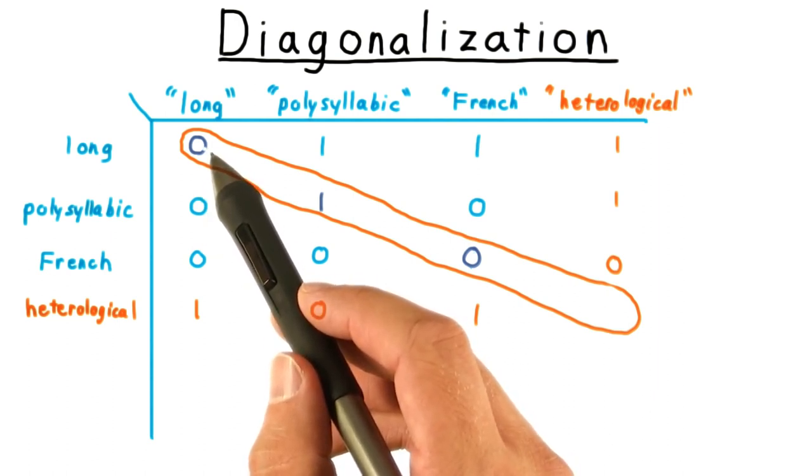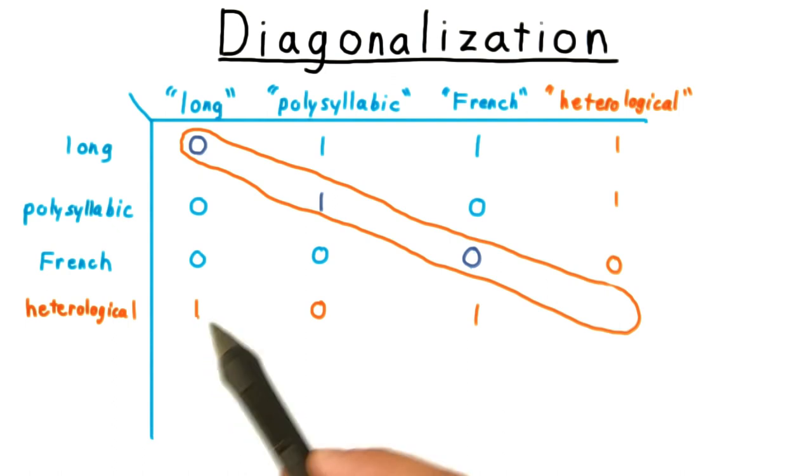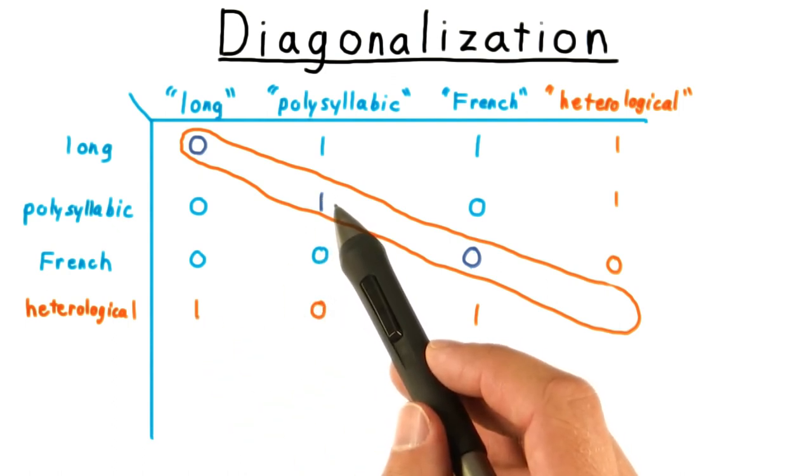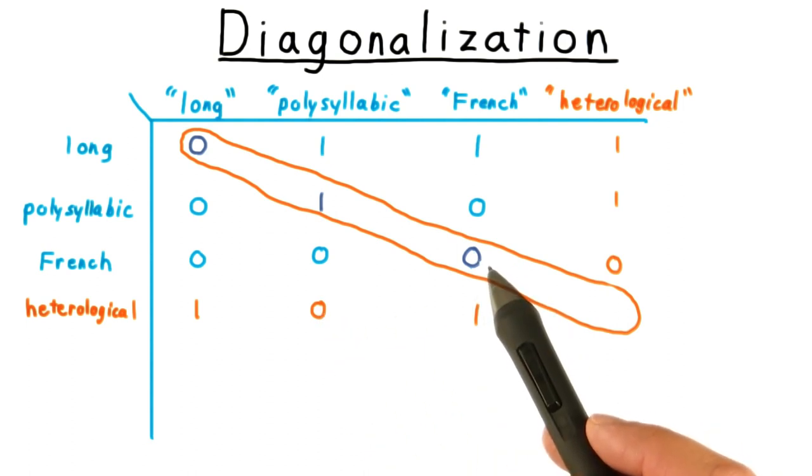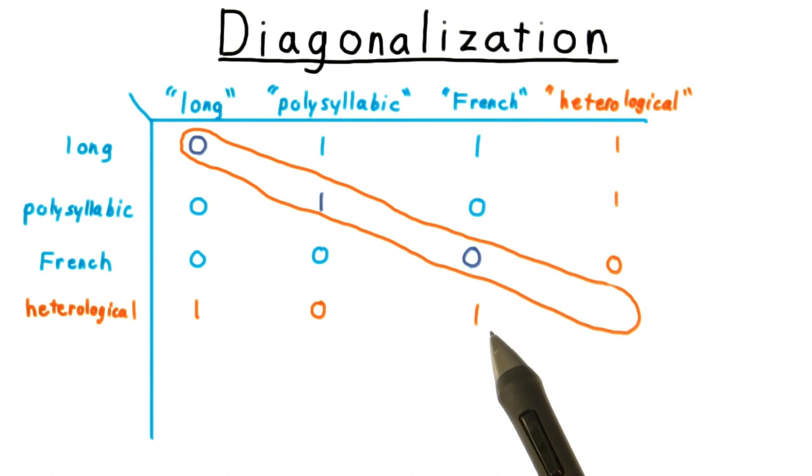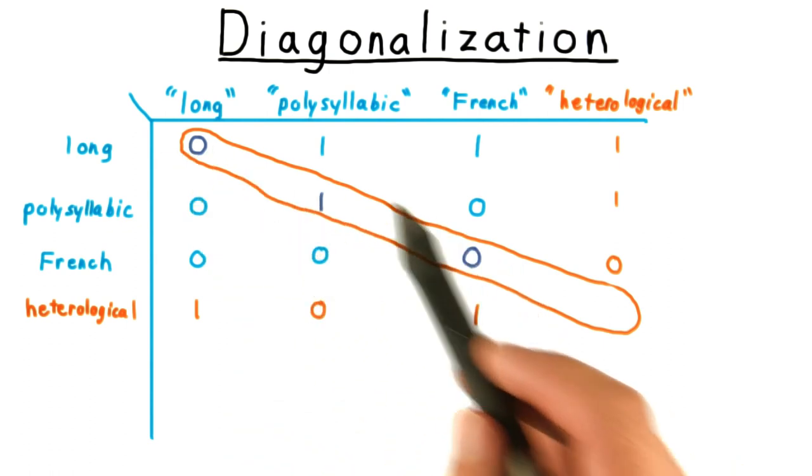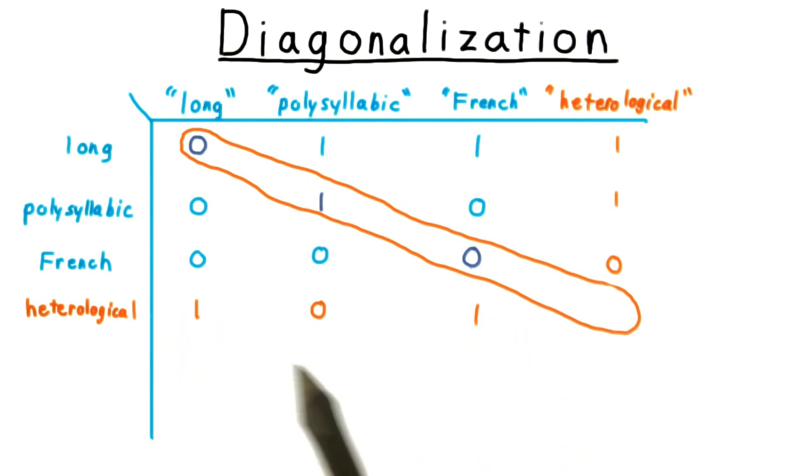Long is not a long word, so it is heterological. Polysyllabic is a polysyllabic word, so it is not heterological. French is not a French word, so it is heterological. In effect, we've taken the values along this diagonal and flipped them to create this row.